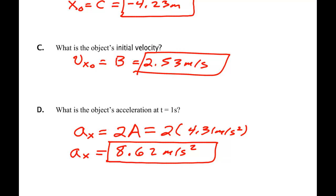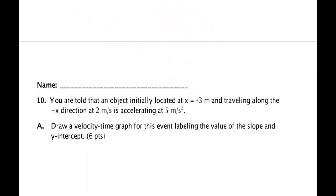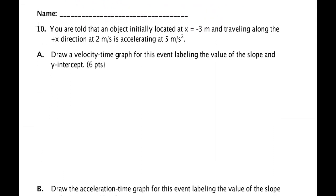Let's go on to the next problem. Problem 10. You are told that an object initially located at minus 3 meters and traveling along the positive X direction at 2 meters per second is accelerating at 5 meters per second squared.